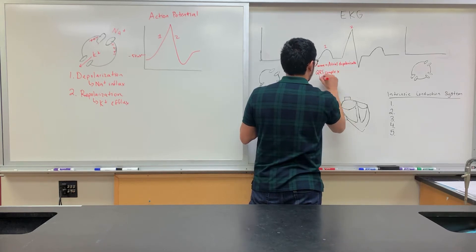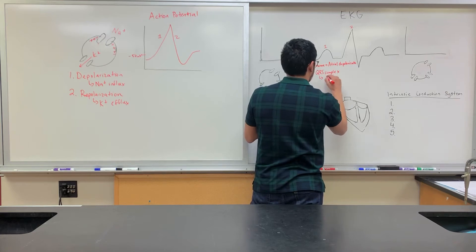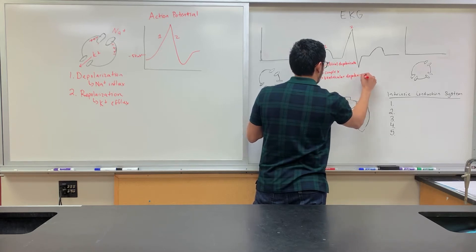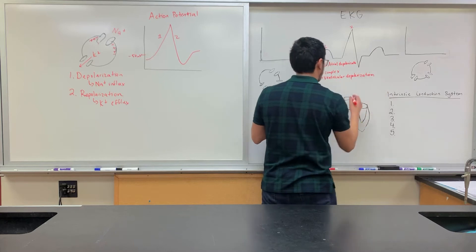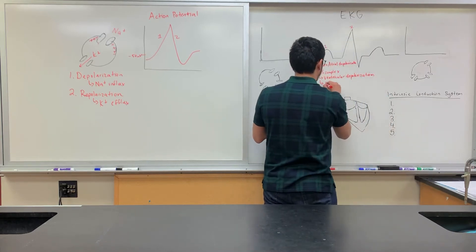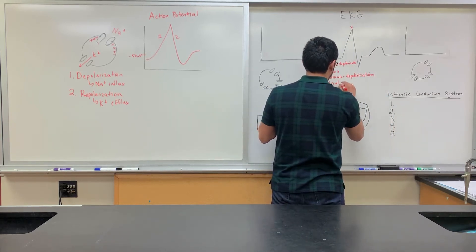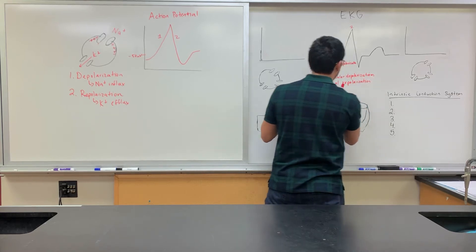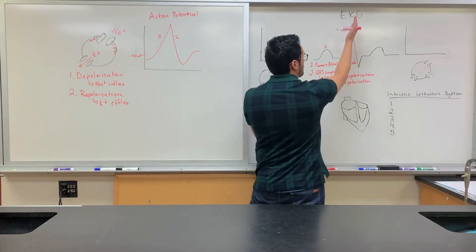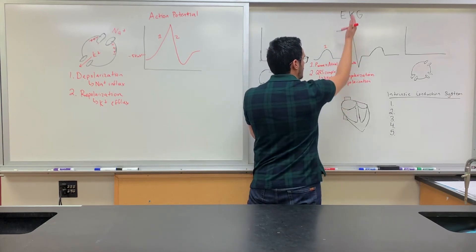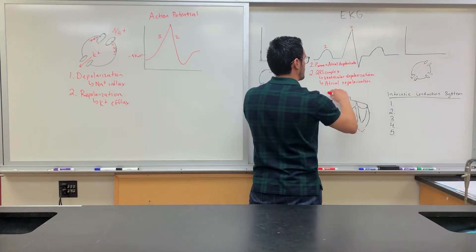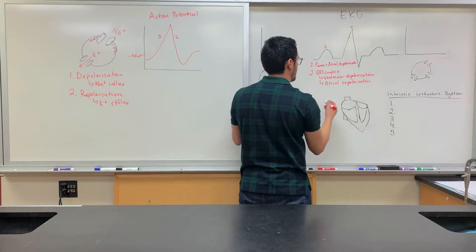During the QRS complex, what occurs? Ventricular depolarization as well as atrial repolarization. Atrial repolarization is not shown because look at the peak here for ventricular. It's very large compared to what atrial repolarization would look like. It's not shown on the EKG.